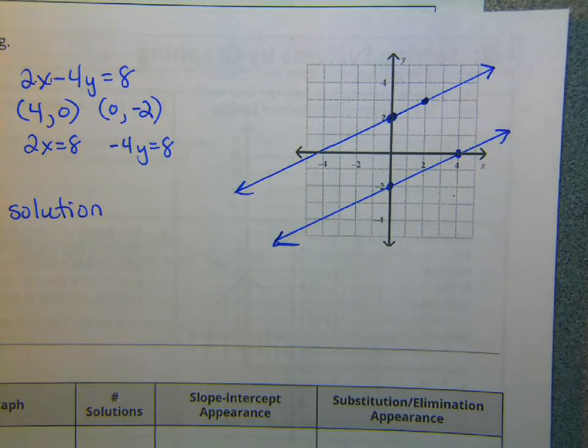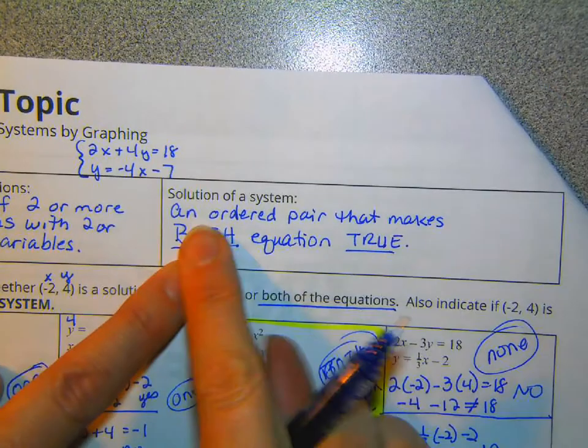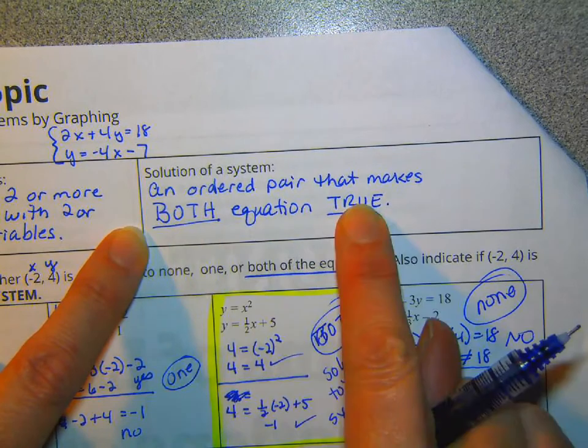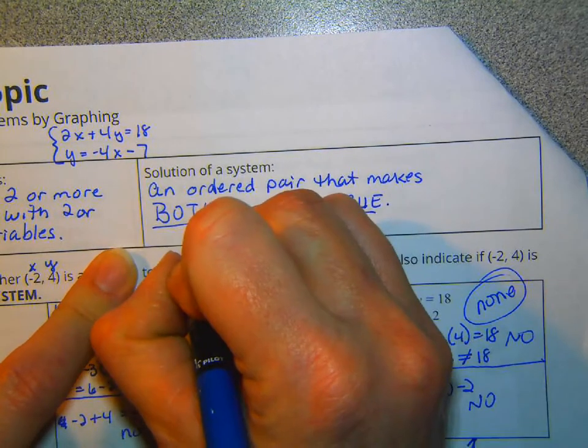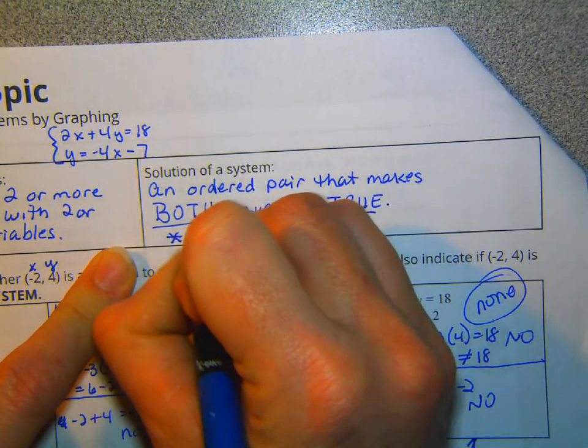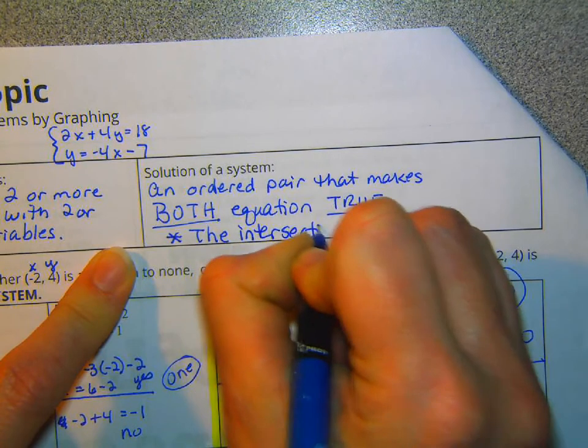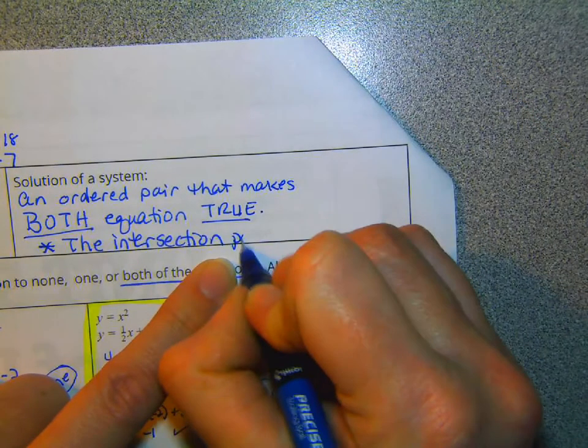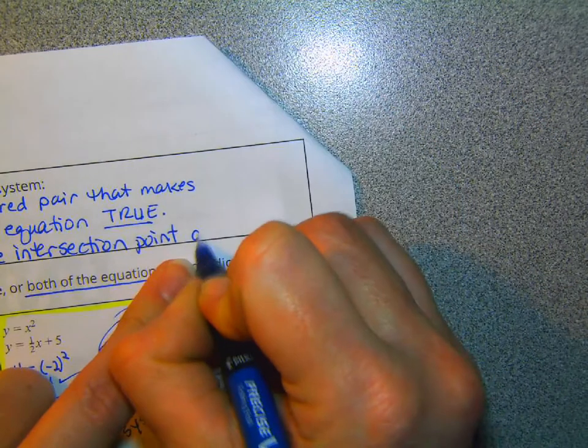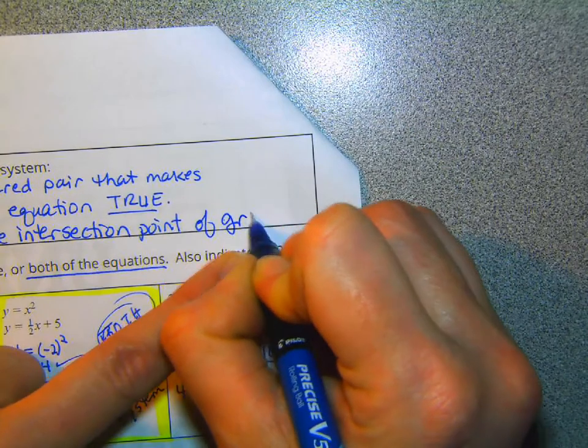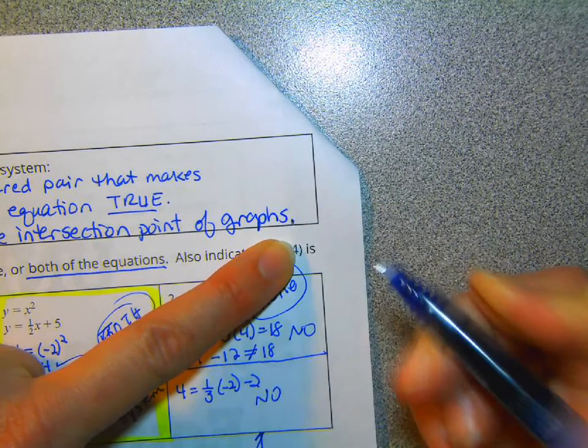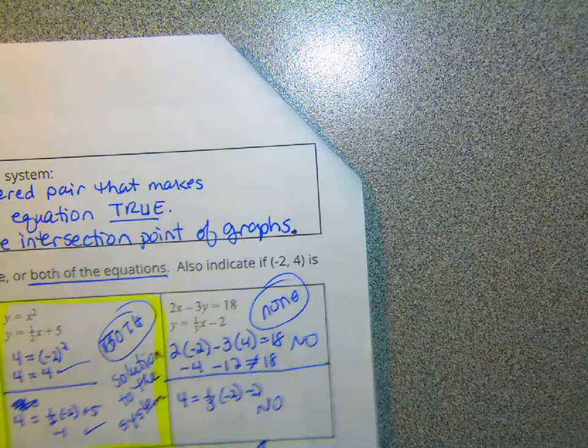Oh, right here, we should add to this. An ordered pair that makes both equations true. Or the intersection point of graphs. They don't have to be lines, but that's what we're doing right now. The intersection point of the graphs. Whoopsie-daisy.